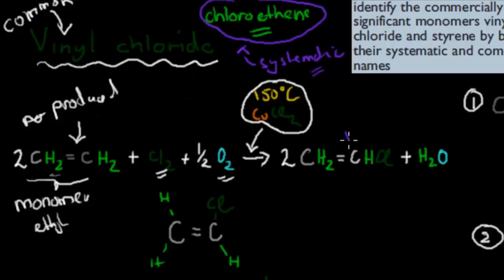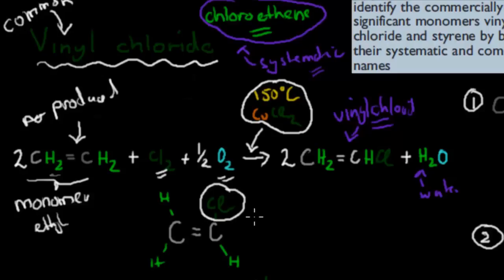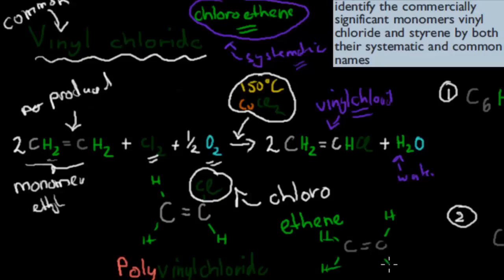Then we produce our vinyl chloride monomer, and we also produce water as a byproduct. The difference between ethylene and vinyl chloride is just this one chlorine in the chain. So the name chloroethene: chloro, as in from chlorine, and ethene, because it has that basic structure of ethylene. Ethylene had a double bond and four hydrogens, and if you compare that structure to vinyl chloride, you can see it's almost the same except for that one chlorine substituted in — that's why it's called chloroethene.